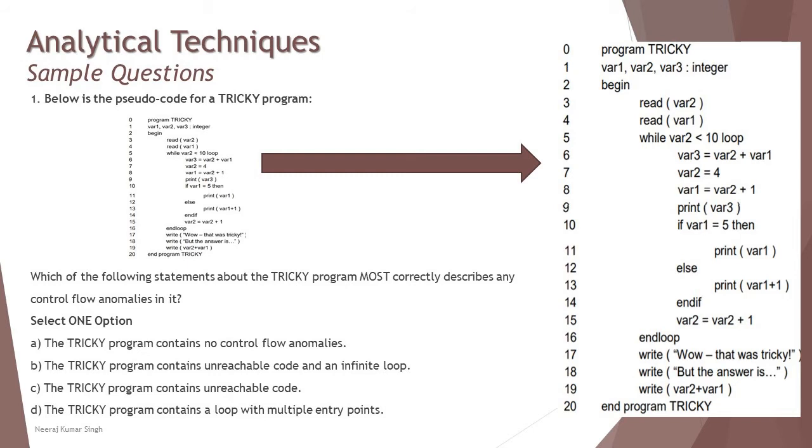So now if you look at line number 10, if var is equal to var1, it will always be 5 no matter what you put, and then line number 13 will never be reached or will not be ever executed. That means the loop will continue, the while loop will continue for infinite times, and var plus 1 printing line number 13 will never be reachable. And that's where we find out the right answer is B, which says the TRICKY program contains unreachable code and infinite loop.